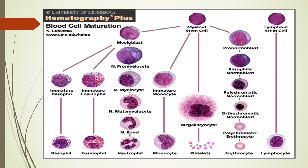In more detail: myeloid stem cells differentiate into RBCs, megakaryocytes and platelets, monocytes, and granulocytes — which may be basophil, eosinophil, or neutrophil. These go through all stages of development. For a neutrophil, the stem cell differentiates into a myeloblast, then a promyelocyte, myelocyte, metamyelocyte, band form, and finally a mature neutrophil. The same process occurs for basophil and eosinophil series.